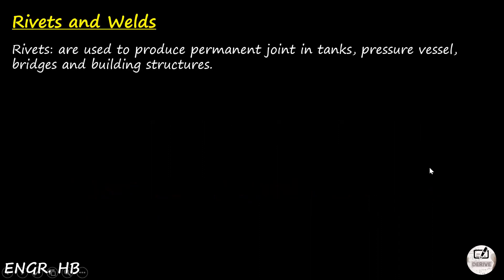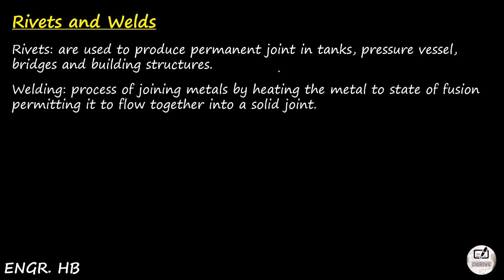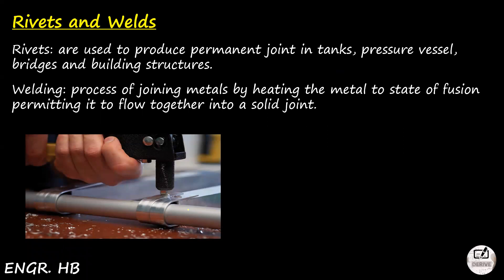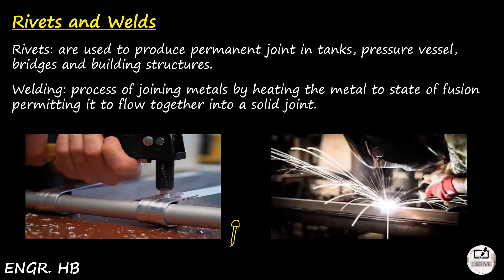So rivets and welds. Rivets are used to produce permanent joints in tanks, pressure vessels, bridges, and building structures. In bridges, we're using rivets before welding. Welding is the process of joining metals by heating the metal to state of fusion, permitting it to flow together into a solid joint. We are all familiar with riveting and welding especially from first year and second year days in our mechanical engineering journey because it's already tackled in machine shop practices. We have pictures here of rivets, and of course the appearance of rivets is like this. And of course we have this welding here.